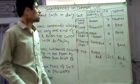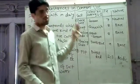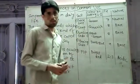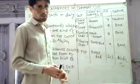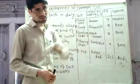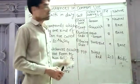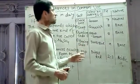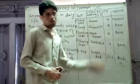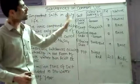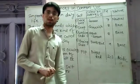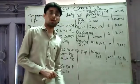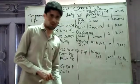So in this way, with the help of pH and by observing the color with the help of a universal indicator, we can determine the pH along with the nature of the substance that we use in our day-to-day life.